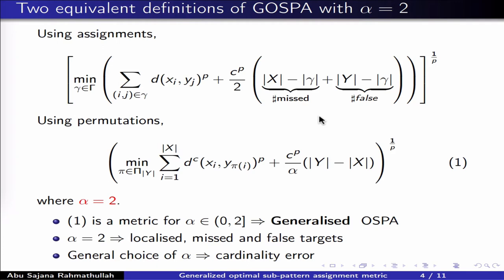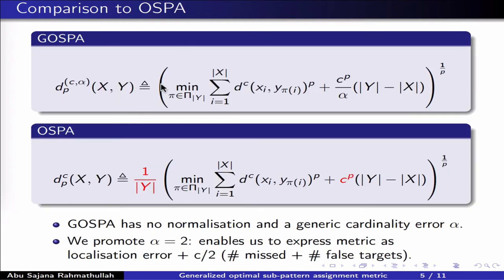We argue that this decomposition has considerable advantages. If we express GASPA using the form where we optimize over permutations, it is easy to compare it with OSPA. There are two important differences: first, OSPA is normalized in that it divides the cost by the cardinality of y. Second, the cardinality errors are penalized by c over p in OSPA and c over p divided by alpha in GASPA. We promote alpha equal to 2, which enables us to express GASPA as the sum of the localization error and c over 2 times the number of missed and false targets. We will continue with three examples to illustrate why we prefer a metric that is unnormalized and separates into these three terms.